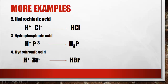Last example for binary acids: hydrobromic acid, composed of hydrogen and bromine. Hydrogen has a charge of positive 1 and bromine has an oxidation number of negative 1. Since the charges are equal, there is no need for the crisscross process, so the final formula is HBr.